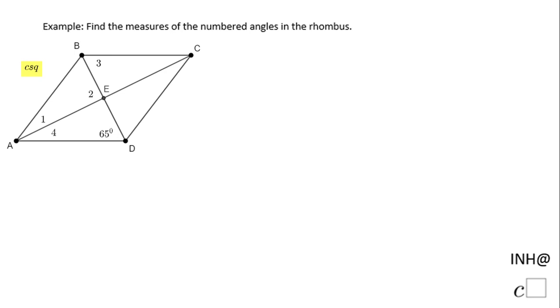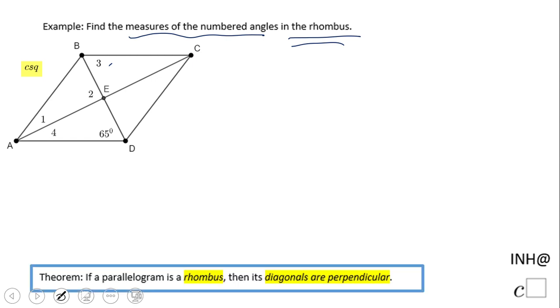Welcome back to C-squared. In this problem we need to find the measures of angles 1, 2, 3, and 4 in this rhombus. So what is so cool about a rhombus? Look down here - the diagonals are perpendicular. That is one property, and another one I didn't mention: the diagonal bisects opposite angles.